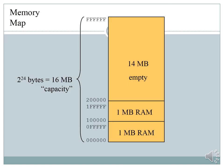For example, a system with a capacity of 2 to the power 24 bytes — which equals 16 megabytes — with two 1-megabyte RAM modules residing consecutively at the bottom of memory: the first megabyte is RAM, the second megabyte is RAM, and the remainder is empty. In hexadecimal, 1 megabyte equals 2 to the power 20, and you show where each block starts and ends to give a simple memory map.